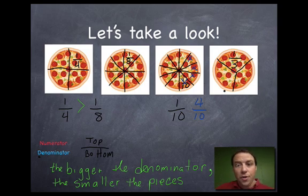This is the biggest piece we have so far. So even though the denominator is small, that just means the piece is bigger. One third is much larger than a tenth, an eighth, and even a fourth.